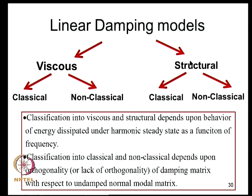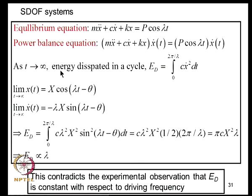A broad classification of linear damping models: damping is either viscous or structural, and each type can be classical or non-classical. The viscous/structural distinction relates to how energy dissipated per cycle depends on frequency. The classical/non-classical distinction relates to the structure of the damping matrix: damping is classical if the undamped normal modes diagonalize the damping matrix.